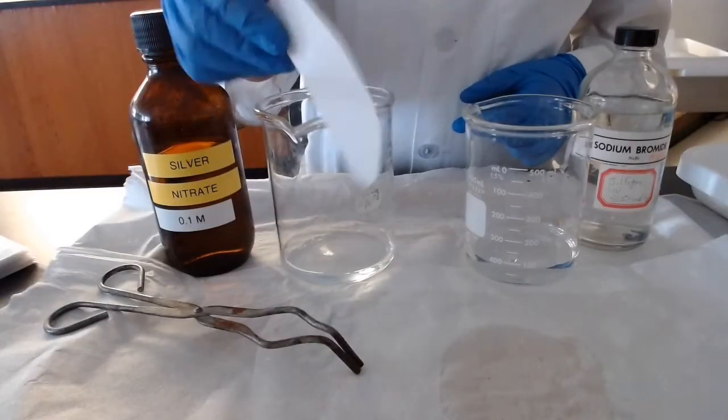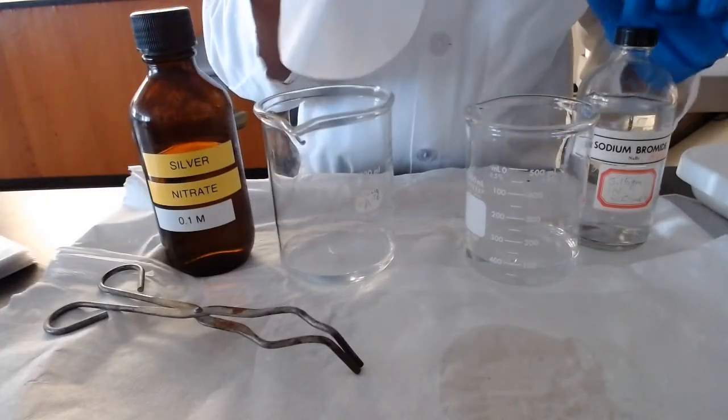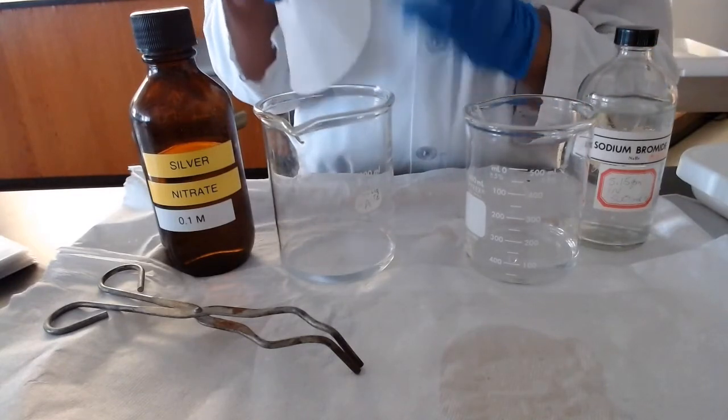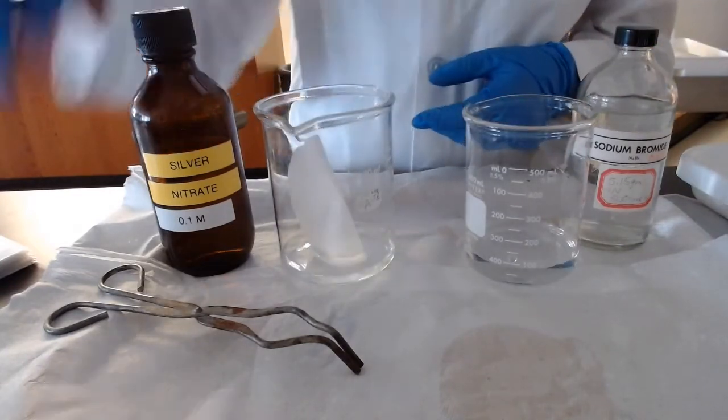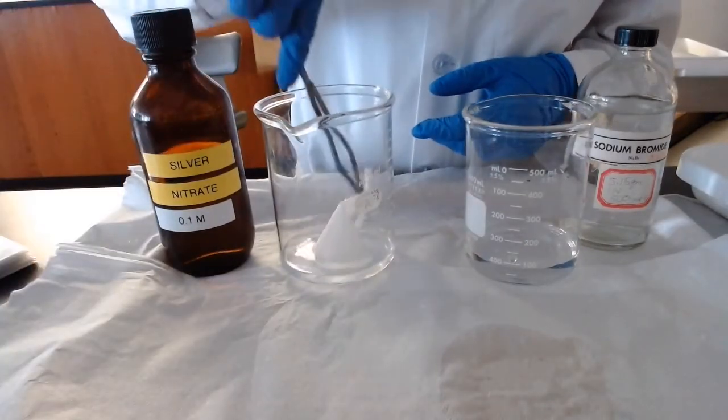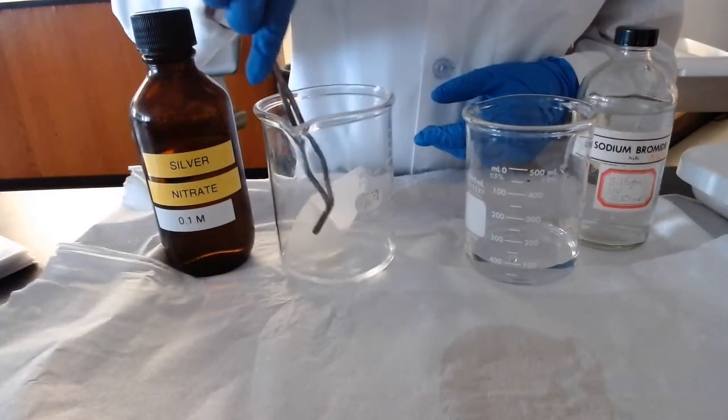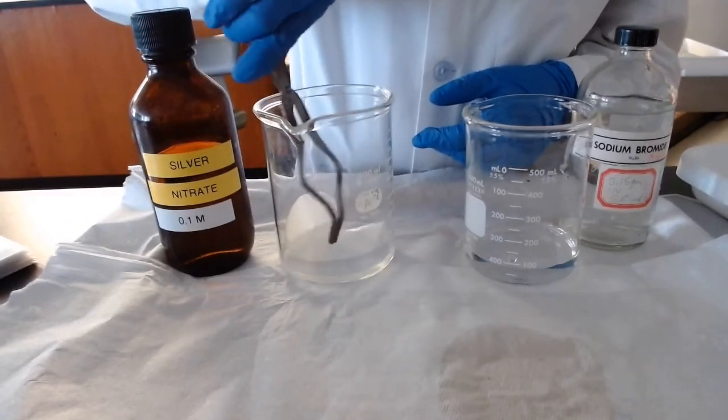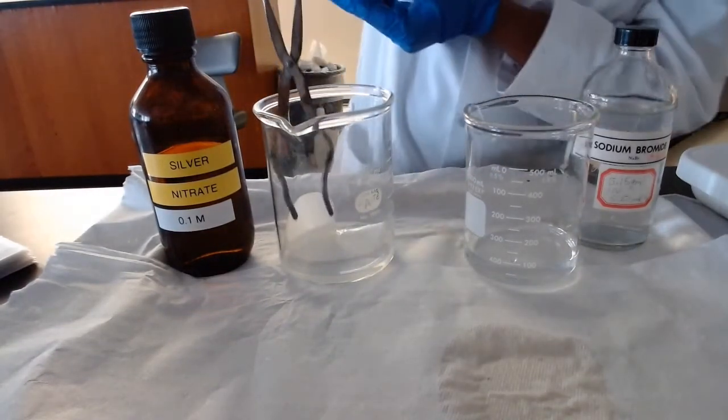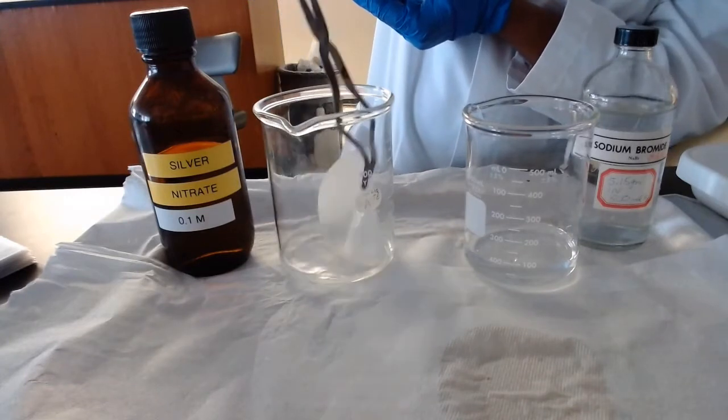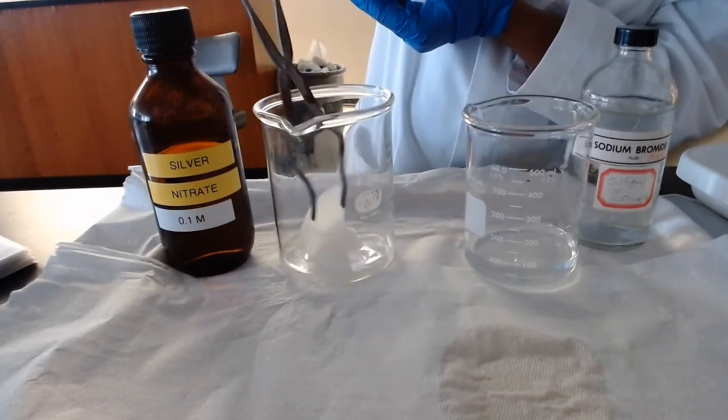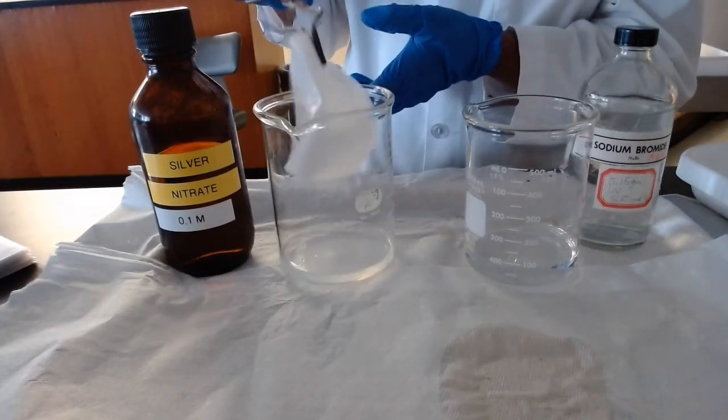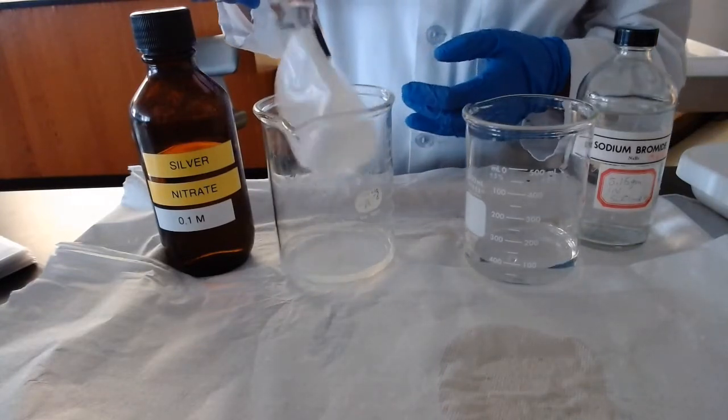I have the dry paper after placing it into the sodium bromide. Now I will place it into the silver nitrate, and I will use this to make sure that it's completely soaked with the silver nitrate. At this stage, I will quickly place this into a dry place for about 20 minutes, and then we will expose it to the light.